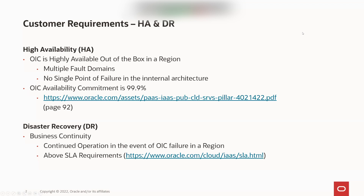What are the customer requirements for high availability and disaster recovery? High availability for Oracle Integration Cloud is there out of the box. We have multiple fault domains in a region, and in some regions also multiple availability domains, and Oracle Integration Cloud is spread across those fault domains with no single point of failure in the internal architecture. The OIC availability commitment is 99.9%, documented publicly. Disaster recovery is for business continuity, meaning continued operation in the event of a complete OCI region failure — this is above the SLA requirements.